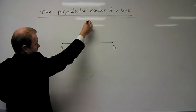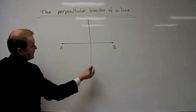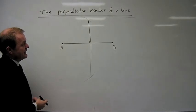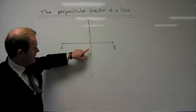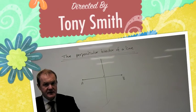when you join them up with a ruler, that will split the line exactly in half and that will be your perpendicular bisector of a line.